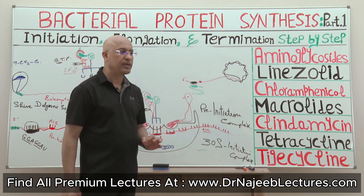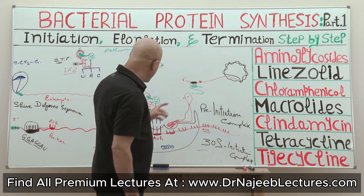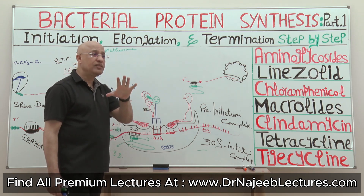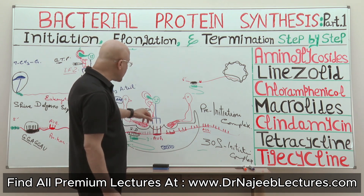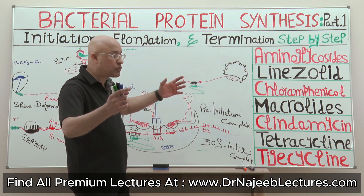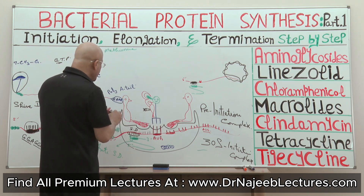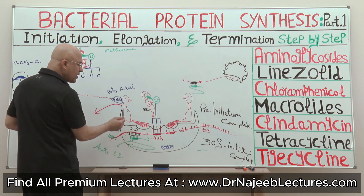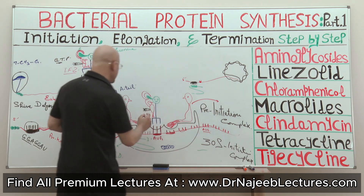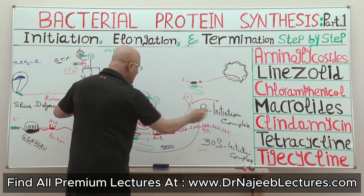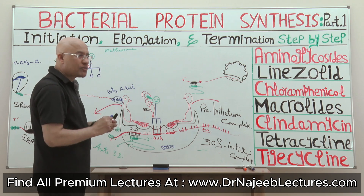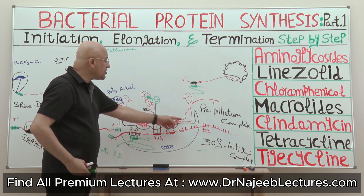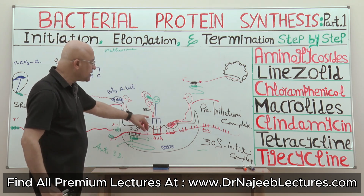Now the last function involves initiation factor number 2. It will utilize its GTPase function — it will break down GTP, release a lot of energy, and due to that energy release, initiator factor number 3 and initiator factor number 1 will both fall away. So when GTPase fires, all these initiation factors leave the 30S subunit along with the initiator transfer RNA being properly positioned.